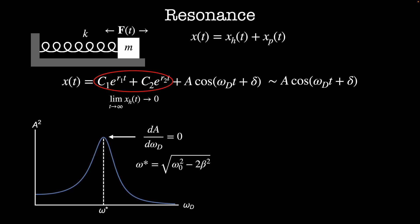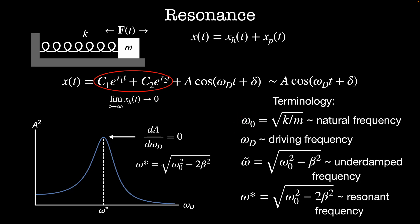In this problem we've introduced a lot of notation, so let me match it to the physical quantities. Omega naught equals the square root of k over m, the natural frequency for our undamped oscillator. Omega_d is the driving frequency. Omega tilde equals the square root of omega naught squared minus beta squared, the underdamped frequency — for weak damping the system oscillates at this slightly smaller frequency. And omega star equals the square root of omega naught squared minus 2 beta squared, the resonant frequency — the driving frequency needed to achieve the largest response.